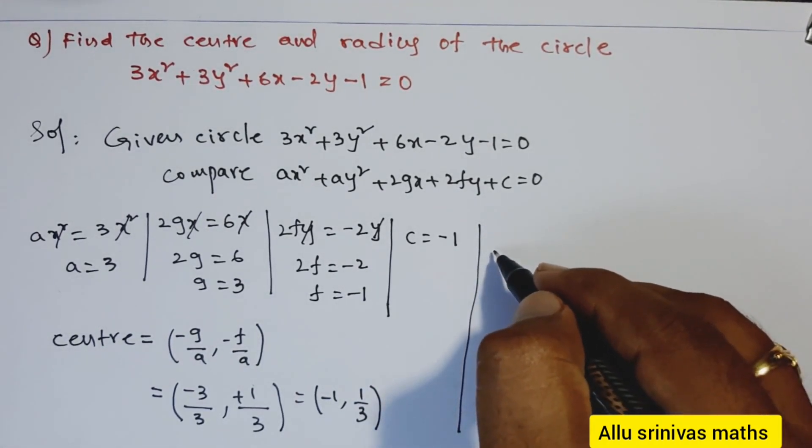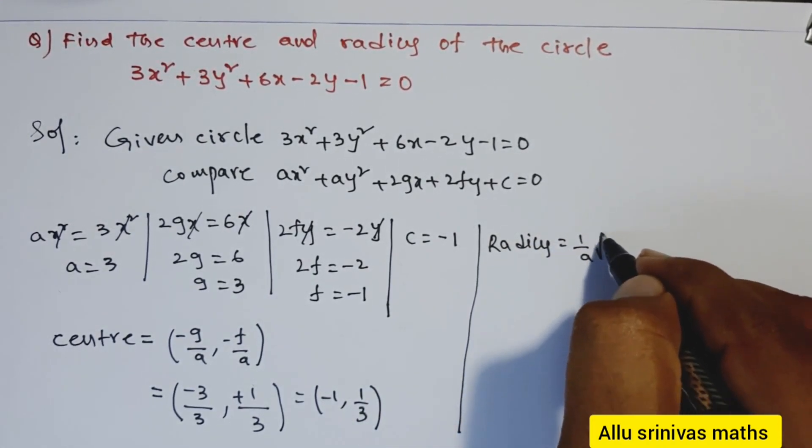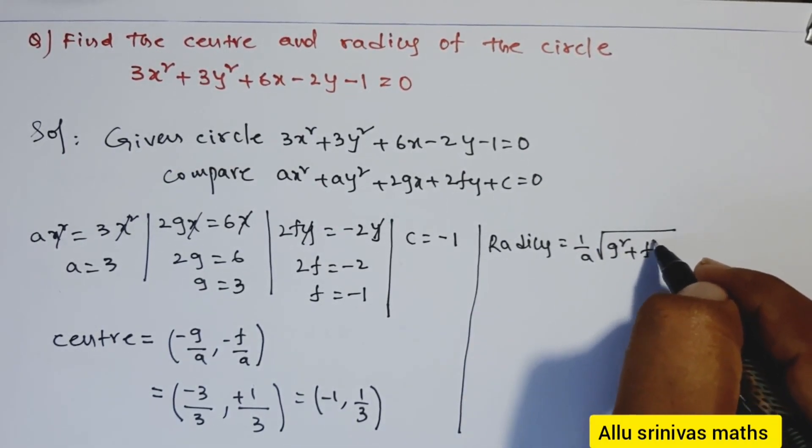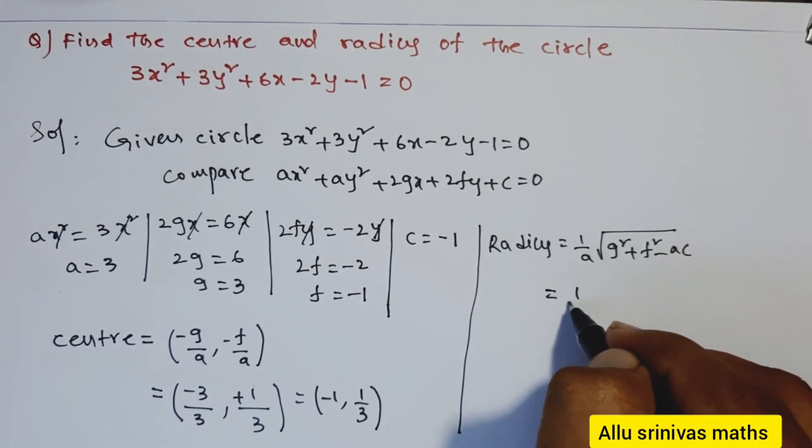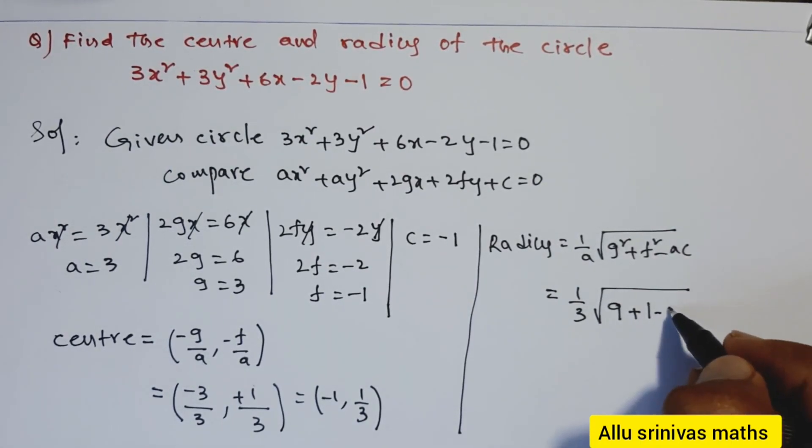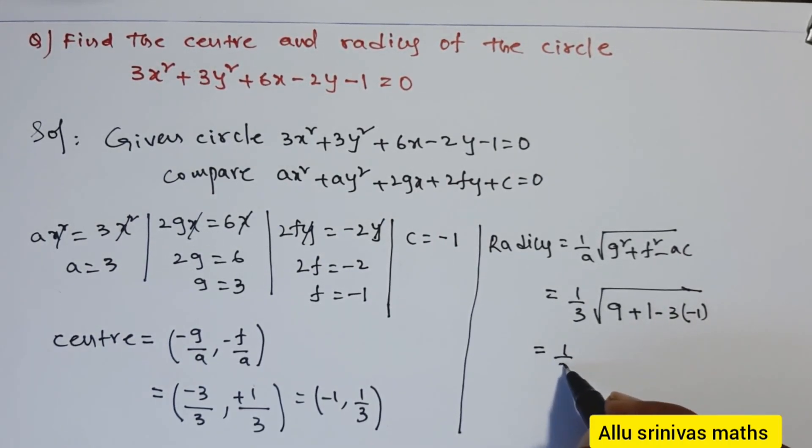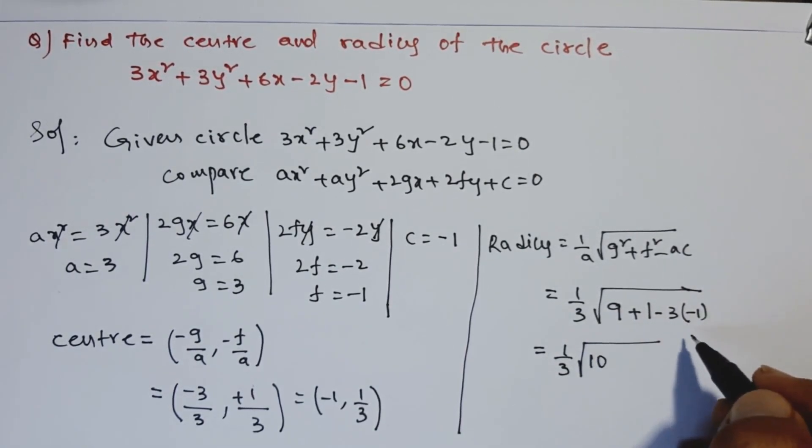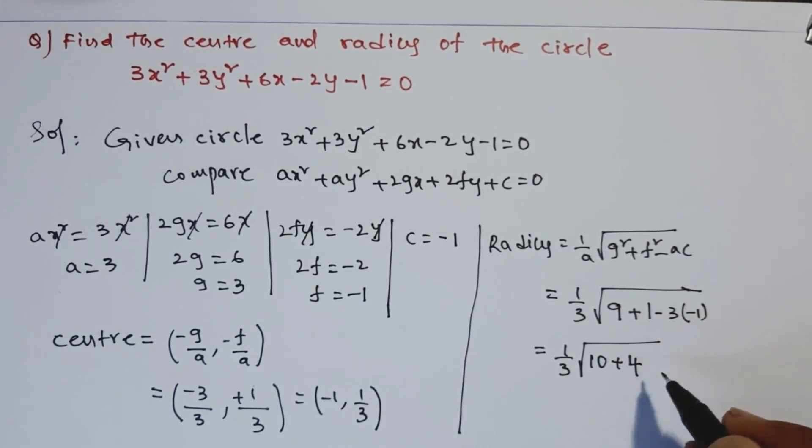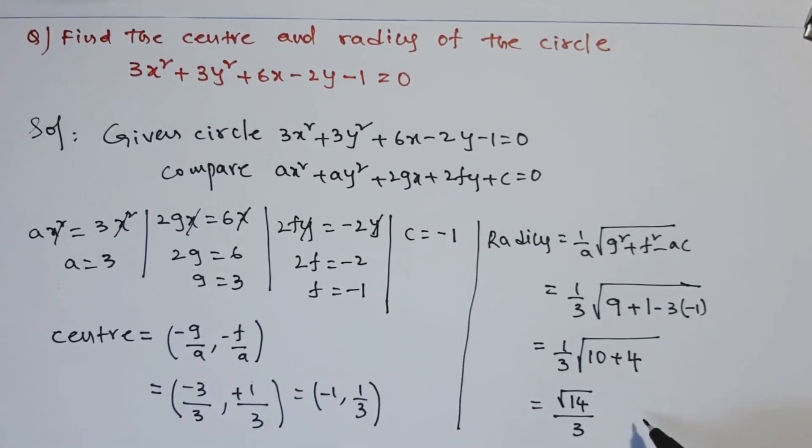Next, we find the radius of the circle. The formula for radius is (1/a)√(g² + f² - ac), where a = 3, g² = 9, f² = 1, and c = -1. Simplifying: (1/3)√(9 + 1 + 3) = (1/3)√14 = √14/3, the radius of the given circle. Thank you.